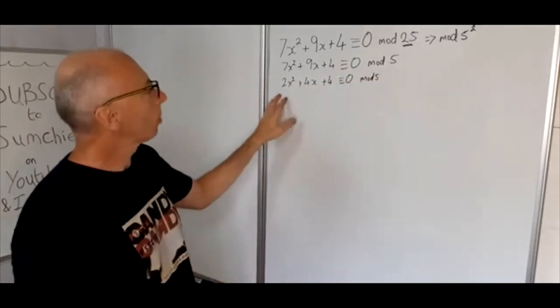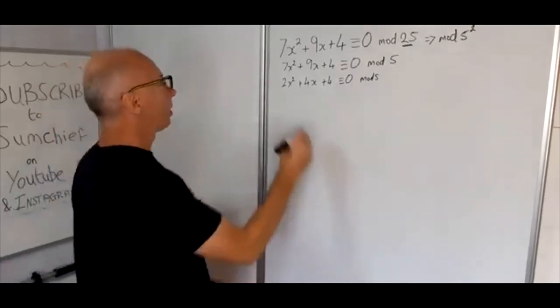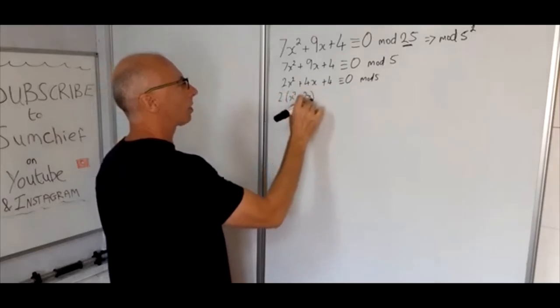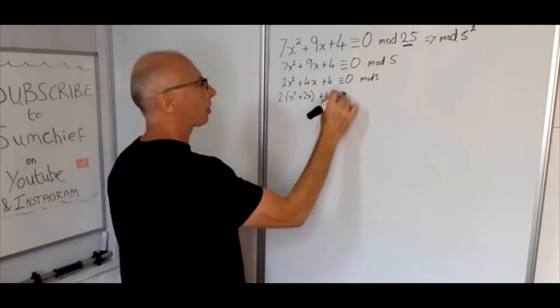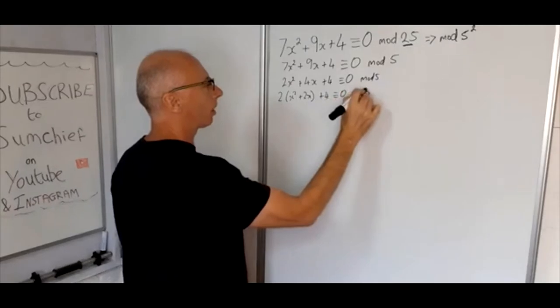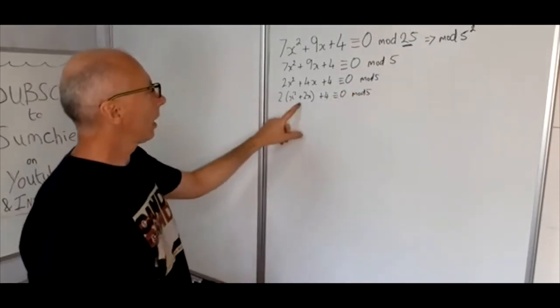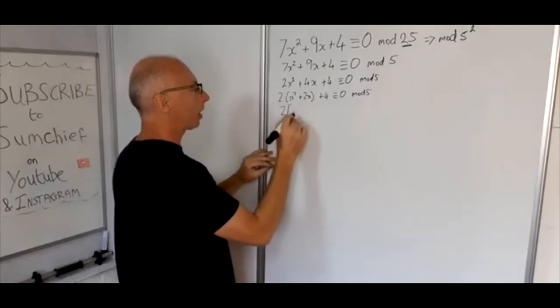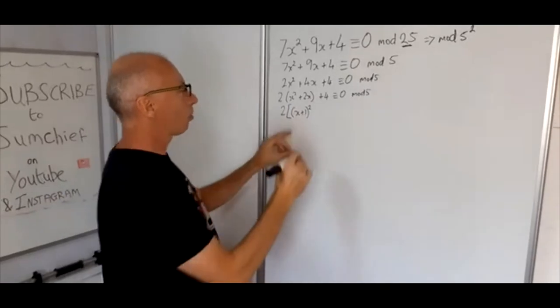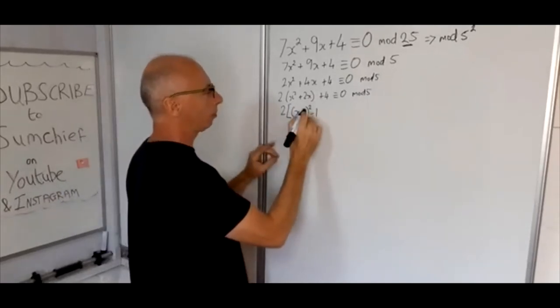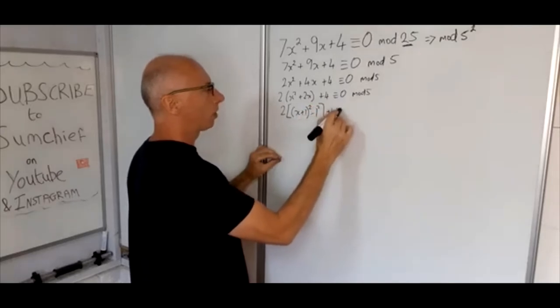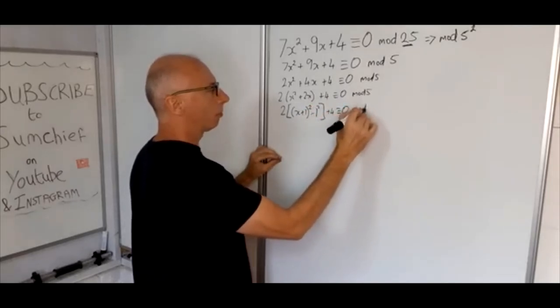So now we'll complete the square. So we've got 2x squared plus 4x plus 4 which is congruent with 0 mod 5. And now we'll take this out inside here. So now I'll put a big bracket and then go 2(x plus 1) squared. Obviously because of the plus 1 we've now got to put a minus 1, minus 1 squared, and then plus 4 is congruent with 0 mod 5.